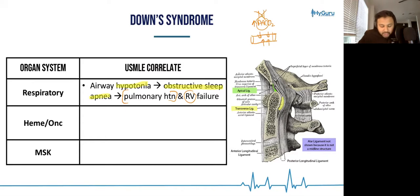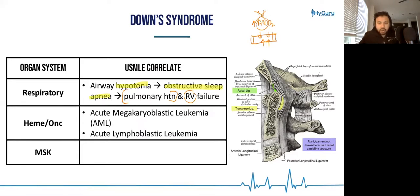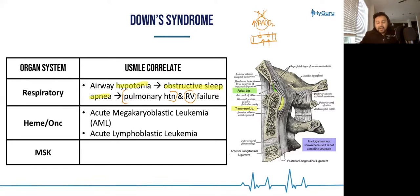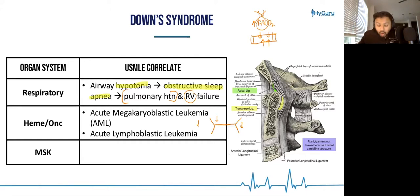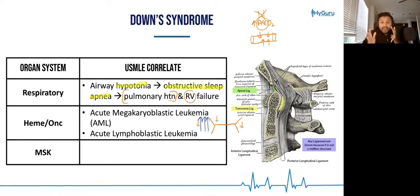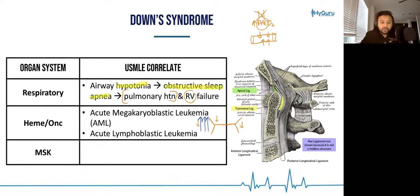From a hematologic standpoint, watch out for early-onset leukemia — either acute megakaryoblastic leukemia (a form of AML) or ALL. Leukemia on the USMLE typically presents as pancytopenia because the leukemia takes over the bone marrow, or as a very high white count. You must differentiate a high white count due to infection — a leukemoid reaction — from leukemia.